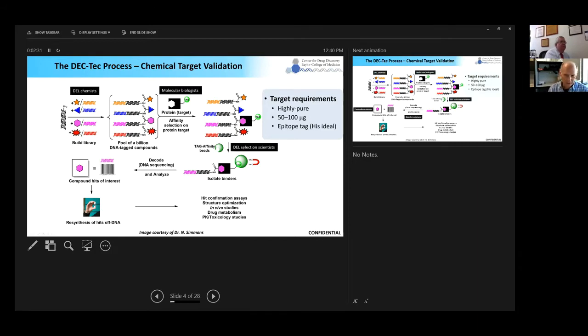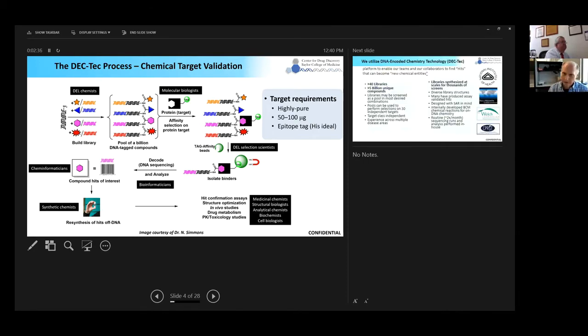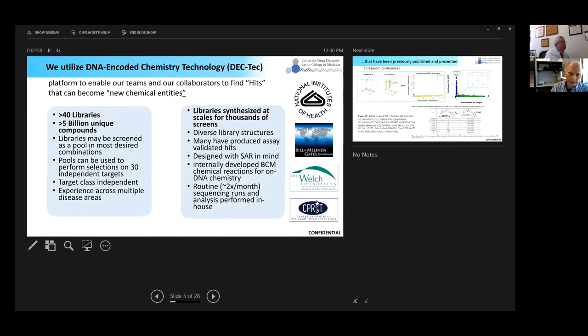These identify the people involved in the process. Currently we have around 40 libraries with over 5 billion unique compounds in this library system. We can perform somewhere around two to three selections per week, and each of those selections with a unique protein survey those 5 billion compounds. There's a lot of information here and I'm just going to keep going for the sake of time.